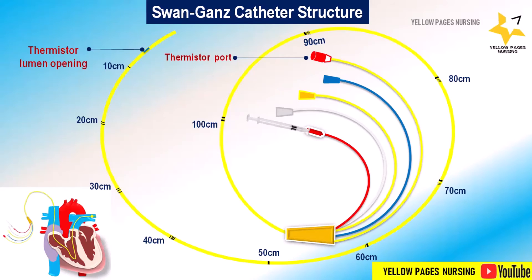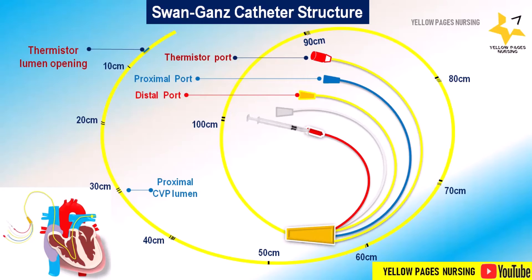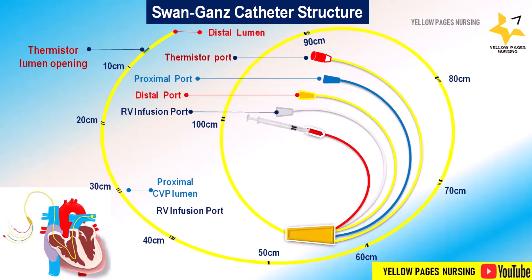Next is the proximal port. The proximal lumen terminates at about 30 centimeters from the tip. Next is the distal port — the distal lumen terminates at the tip of the catheter. Next is the RV infusion port: an optional third lumen called the infusion port, which terminates at about 20 to 30 centimeters from the tip.